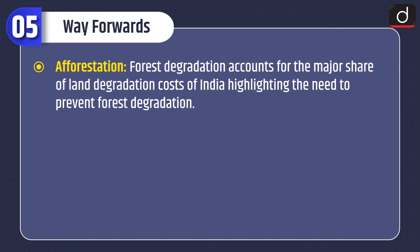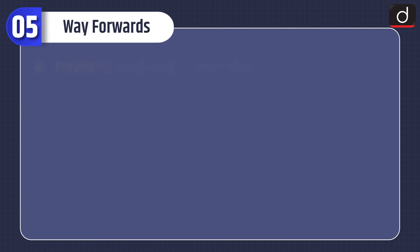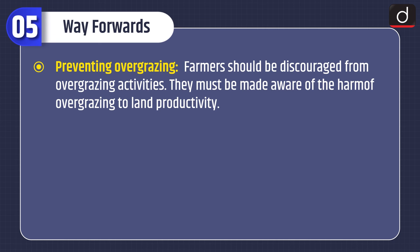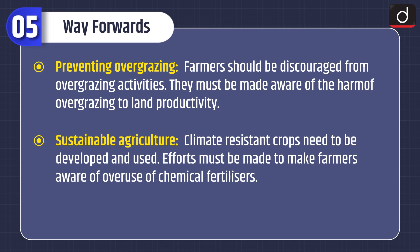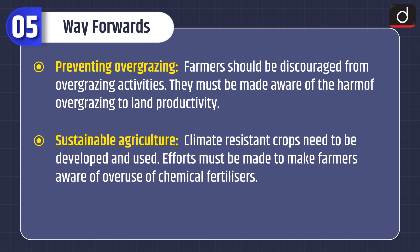Moving on to way forward. First is afforestation: forest degradation accounts for the major share of land degradation cost in India, highlighting the need to prevent forest degradation. Second, using alternative fuels: a major focus is encouraging rural households dependent on forests to switch to alternative fuel sources or at minimum utilize fuel-efficient devices. Third, preventing overgrazing: farmers should be discouraged from overgrazing activities and made aware of the harm to land productivity. Fourth, sustainable agriculture: climate-resistant crops need to be developed, and farmers must be made aware of the overuse of chemical fertilizers.